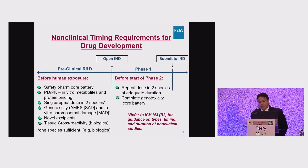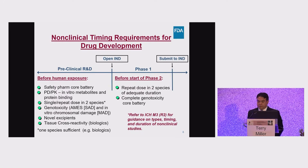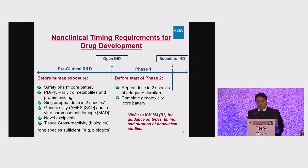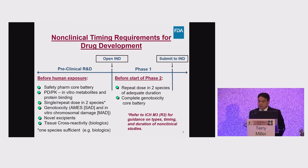As described in ICH guidance M3R2, certain studies are required at each stage of clinical development before the next stage can be initiated. Prior to the first in-human phase one trial, we typically would like to see a safety pharmacology core battery, single and repeat-dose toxicity studies in at least two species (rodent and non-rodent), in vitro gene tox assessments, tissue cross-reactivity studies for biologic products, and qualification of any novel excipients in the clinical formulation.